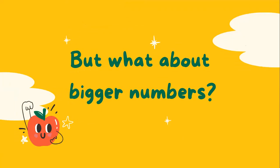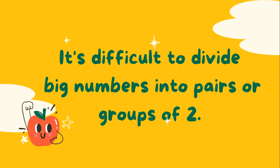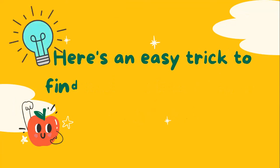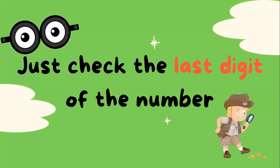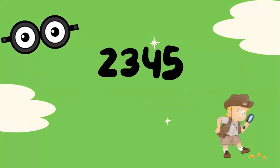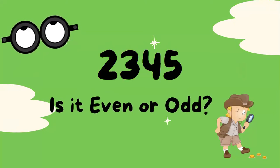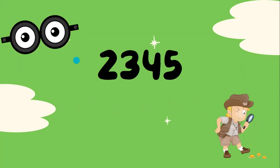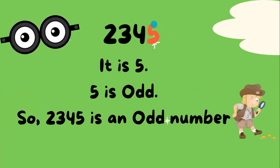But what about bigger numbers? It's difficult to divide big numbers into pairs or groups of two. Here's an easy trick to find out if any number is even or odd: just check the last digit of the number. For example, two thousand three hundred and forty-five — is it even or odd? Check the last digit: it is five, and five is odd, so two thousand three hundred and forty-five is an odd number.